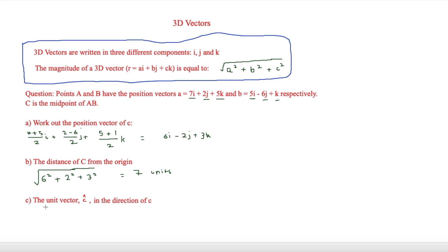Now the final one is looking at a unit vector. And a unit vector is when the magnitude is equal to 1. So then this means that what we're going to do is just divide everything by 7. So that means that we're going to have 6 over 7i minus 2 over 7j and then plus 3 over 7k. And that is our answer for that.